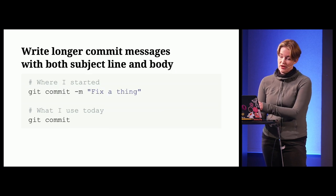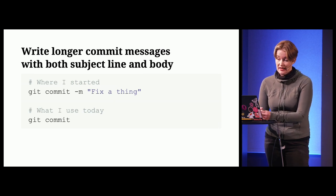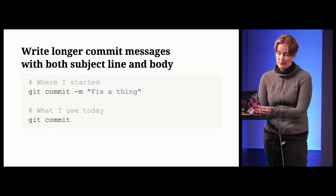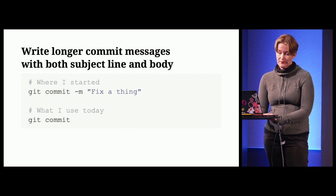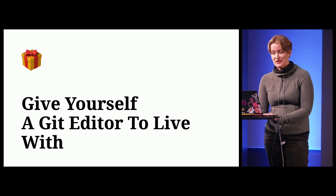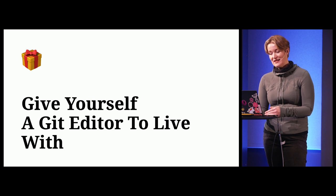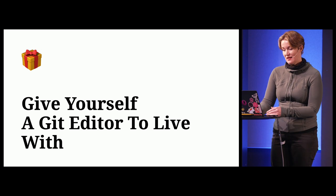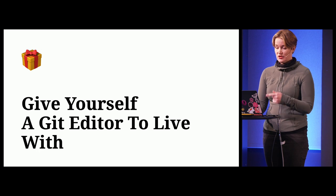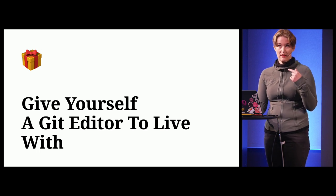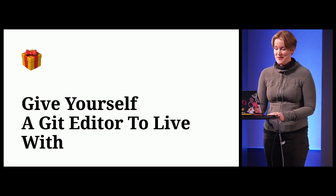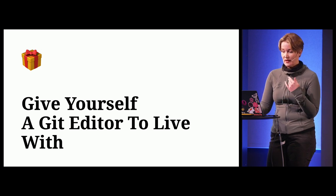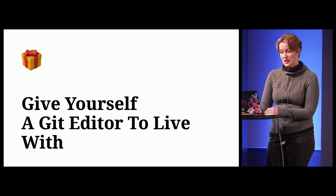I also really like trying to write longer commit messages with both a subject line and a body. Where I started was using dash M and writing the subject title directly, but what I prefer today is to use git commit without the option. What happens then is that Git will open an editor. I really, really recommend giving yourself an editor to live with. A very common hurdle to learn Git operations like interactive rebase or writing longer commit messages is the setting that chooses an editor for Git. If you haven't set anything, it will be the shell default and that will probably be vim. If you want to use a different editor — which many of us do — it's really helpful to first make sure you understand which editor Git will open.